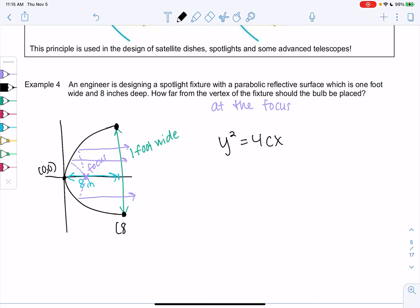And then 1 foot wide means 12 inches. So that means it would be 6 inches to the top and -6 inches to the bottom because that's going to make a distance of 12. So -6. And then my other point will be (8, 6).